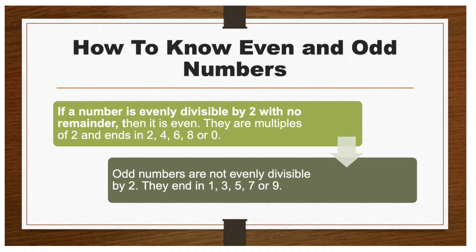Odd numbers are not evenly divisible by 2. They end in 1, 3, 5, 7, or 9.